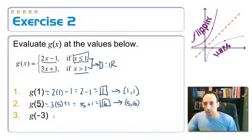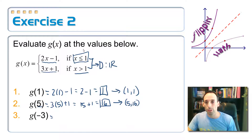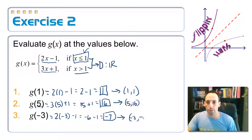And finally, g(−3). Which part of the graph does it go to? This one goes with the top equation because negative three is less than one. So: two times negative three minus one gives me negative six minus one, which is negative seven. That corresponds to the point (−3, −7).